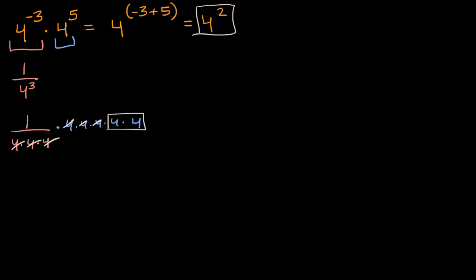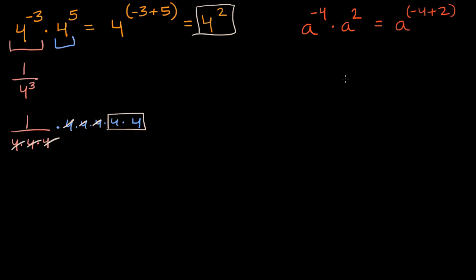Now let's do one with variables. Let's say that you have a to the negative four power times a squared. What is that going to be? Well, once again, you have the same base — in this case, it's a — and since I'm multiplying them, you can just add the exponents. So it's going to be a to the negative four plus two power, which is equal to a to the negative two power.